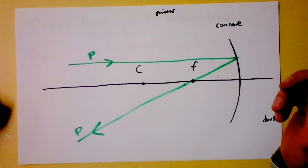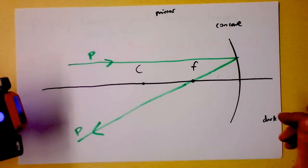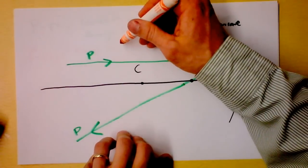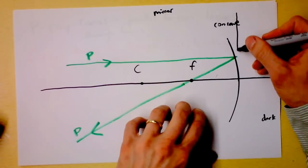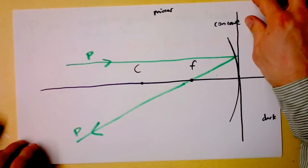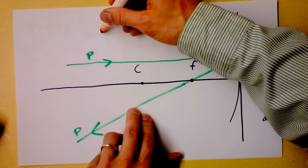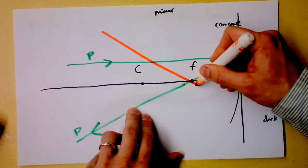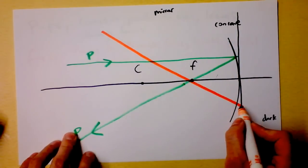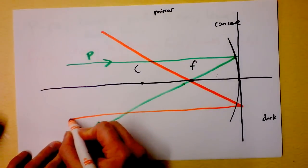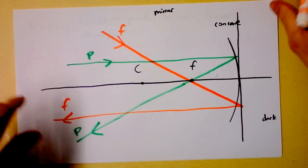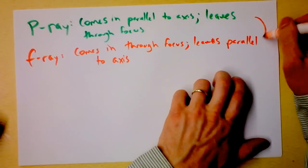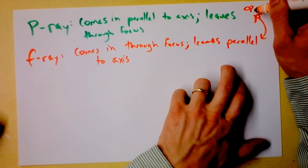Let's try it out. We're going to go to our concave first — that's usually a little bit simpler. I'm going to shoot an F-ray. It's going to come in through the focus. I've got to draw everything as it's interacting with this plane right here, not the mirror surface as shown, because I could get errors introduced. Coming in through the focus and leaving parallel to the axis. And there's that F-ray — F coming in here and leaving parallel. They are exact opposites of each other.